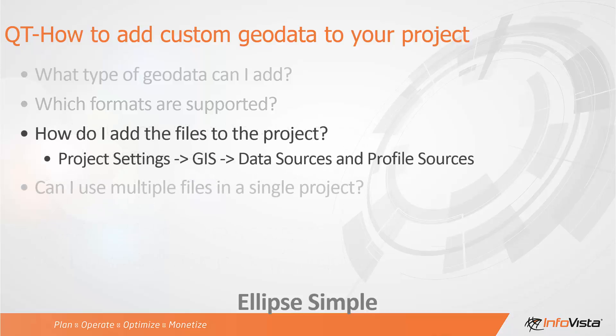How can I add the files to my project? Inside Ellipse, you'll need to go into the project settings menu, then look for the GIS node, and then data sources. Here you select the files you want to add to your project, then go into the profile sources node, where you enable those files so they are visible under the microwave link profiles.